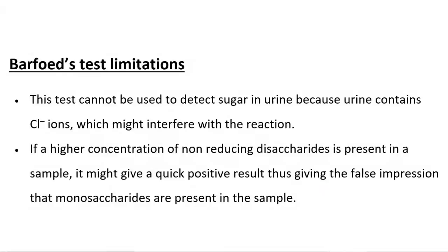The Barfoed's test nevertheless comes with its own limitations. This test cannot be used to detect sugar in urine because urine contains chloride ions which might interfere with the reaction. Also, if a higher concentration of non-reducing disaccharides is present in a sample, it might give a quick positive result, thus giving the impression that monosaccharides are present. This is probably one of the most significant drawbacks of the Barfoed's test, because non-reducing disaccharides such as sucrose, if present in higher concentrations, can easily give a positive result as it eventually gets hydrolyzed by the acid present in the reagent during the test.